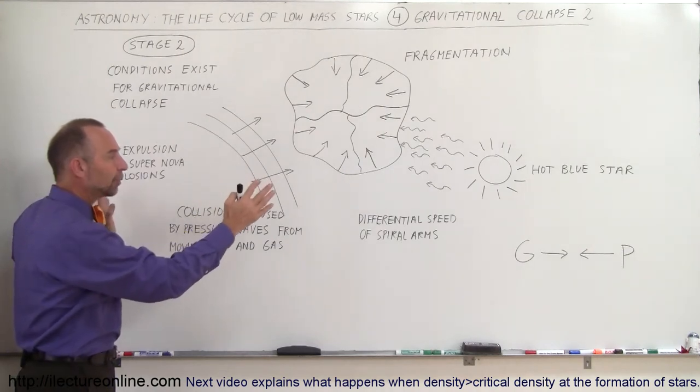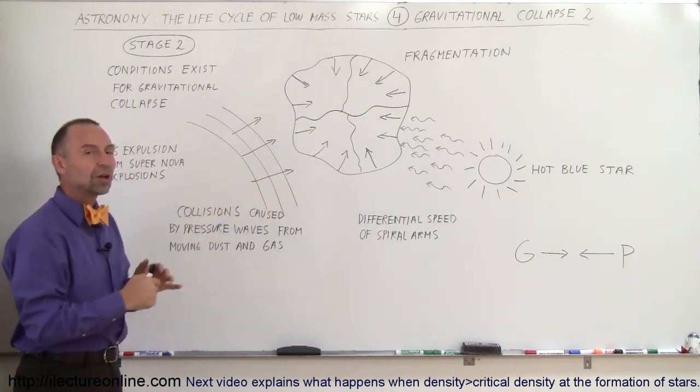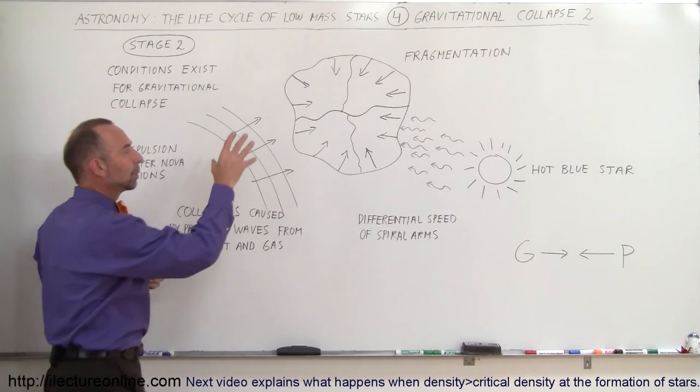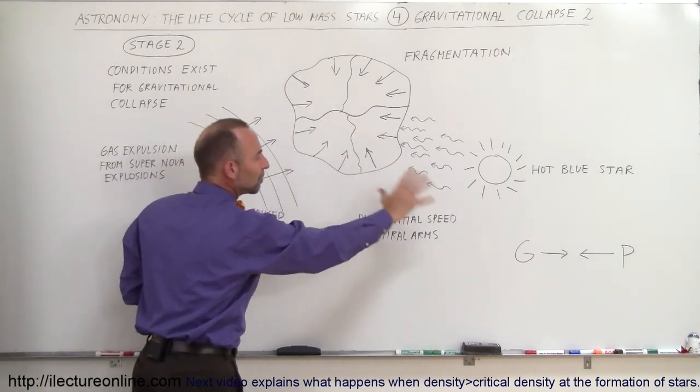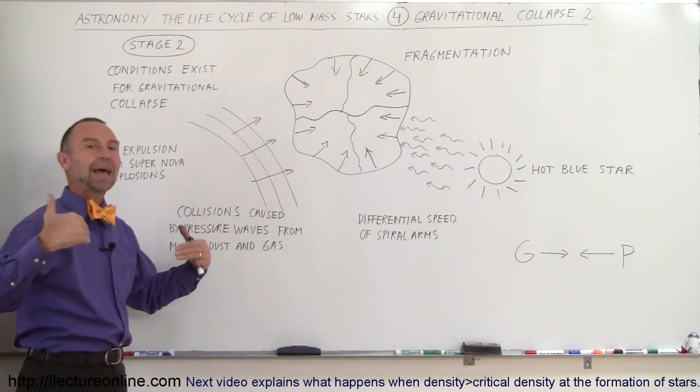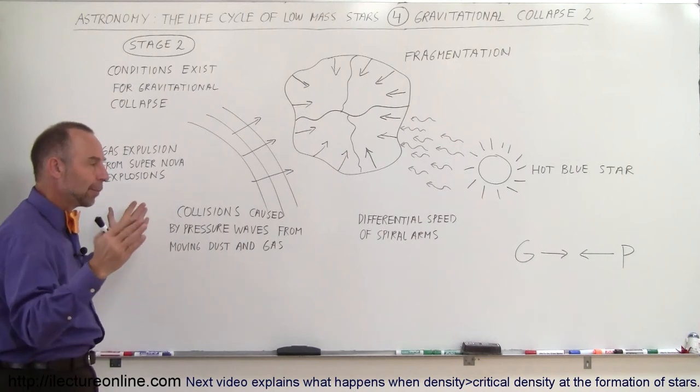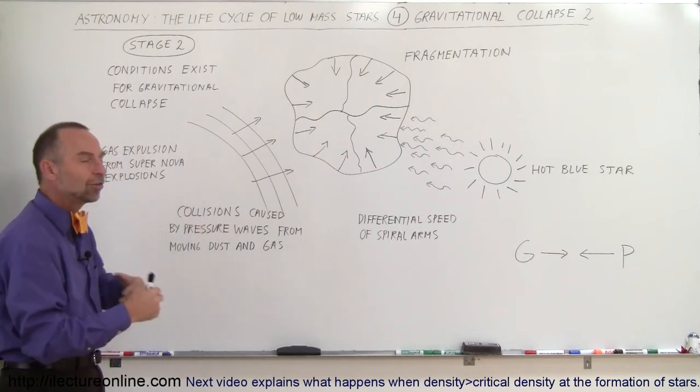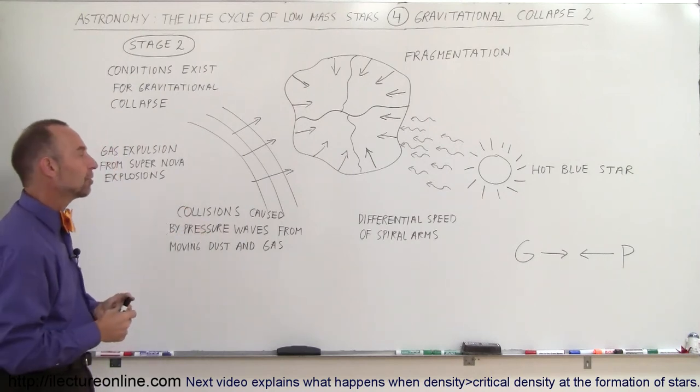But again through external influences the stage two process will start up and will begin to collapse, no longer to be stopped by pressure. Once it gets past a certain density region, the gravitational collapse can no longer be stopped.